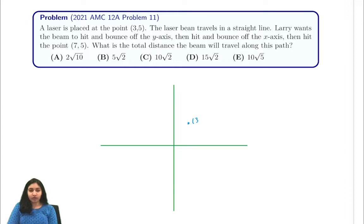We start out at the point (3,5). Then we're going to go to the y-axis, bounce off and hit the x-axis, and then we're going to bounce off and hit the point (7,5). So this is the path of the laser beam.